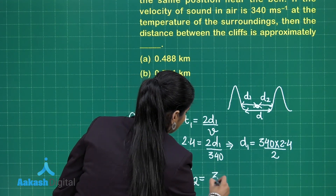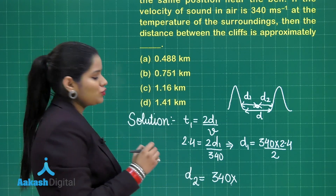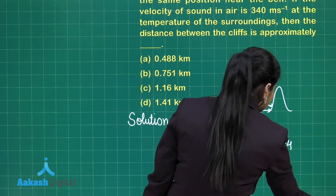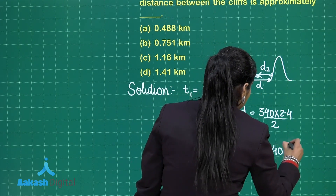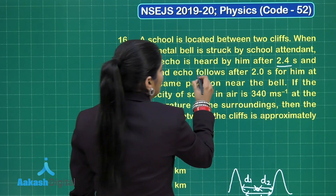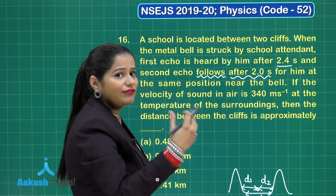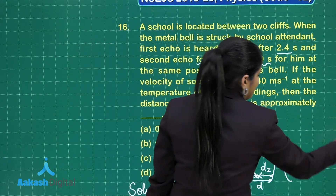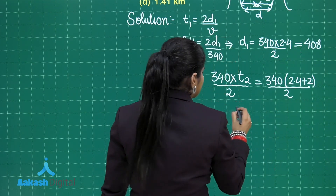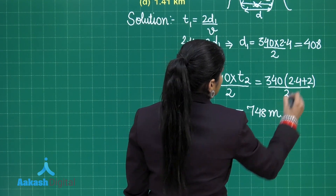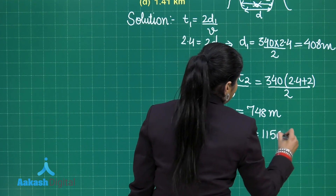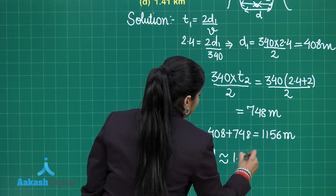In the case of D2, T2 is not going to be 2 seconds — it is going to be 2.4 plus 2, because in the question it is clearly mentioned that the second echo follows after 2 seconds from the first echo. So you need to add these two. D1 comes out to be 408 meters and D2 comes out to be 748 meters. So D is 408 plus 748, that is 1156 meters.